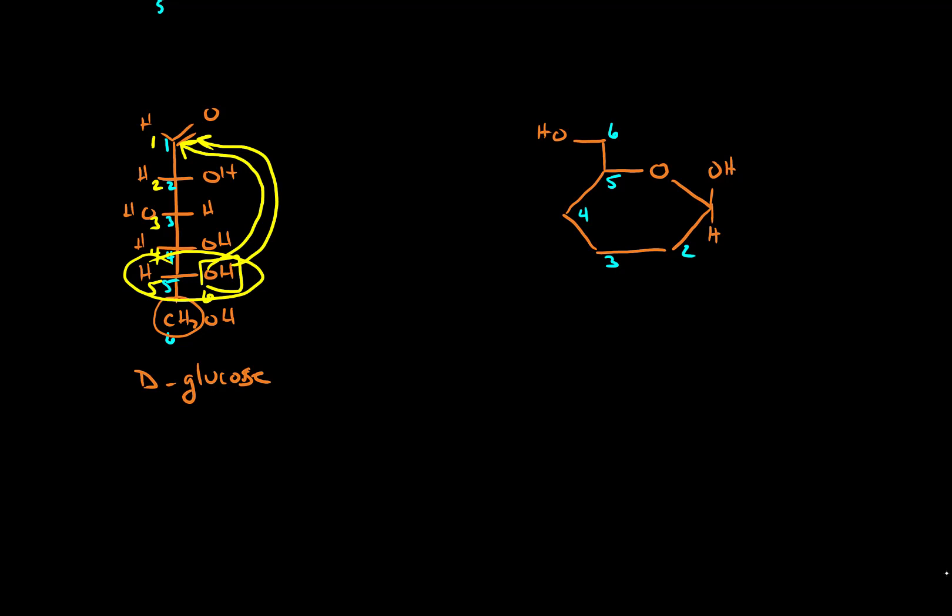On carbon number two, here we see the alcohol group pointing to the right. So when we rotate this clockwise by 90 degrees, it points down. So this alcohol group points down, the hydrogen points up. On carbon number three, we have the alcohol group pointing to the left. So in this case, if we rotate it clockwise by 90 degrees, it points up. So on carbon three, the alcohol group points up, the hydrogen points down. On carbon number four, the alcohol group points right. So it's going to end up pointing down.